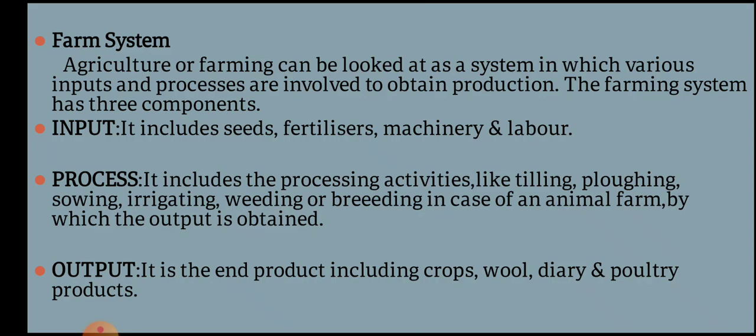The second component involves processes such as tilling, plowing of land, sowing of seeds, irrigating the crops, weeding, and breeding. Breeding is included in cases where there is an animal farm or poultry farm. The third component is the output — the end product, which includes crops, livestock, and dairy products.